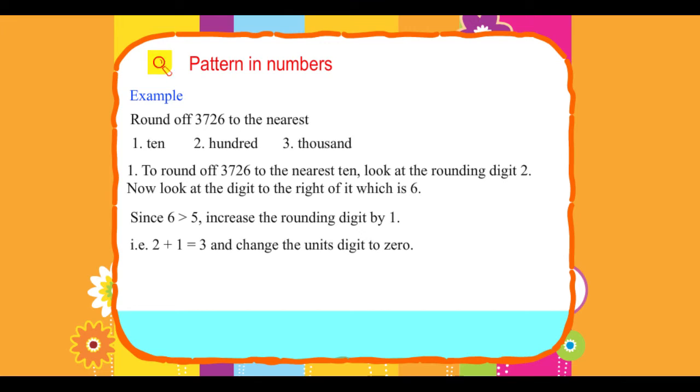That is, 2 + 1 = 3, and change the unit's digit to 0. Therefore, 3726 rounded to the nearest ten is 3730.